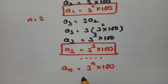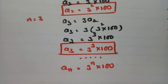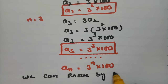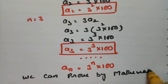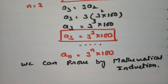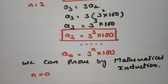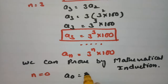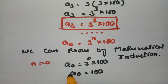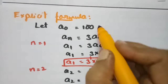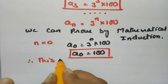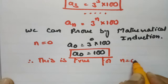Now we have to prove this by using mathematical induction. First, if we put n equal to 0, then A0 equals 3 to the power 0 into 100, which gives A0 equal to 100. This is true as we have taken A naught equal to 100. Therefore this is true for n equal to 0.